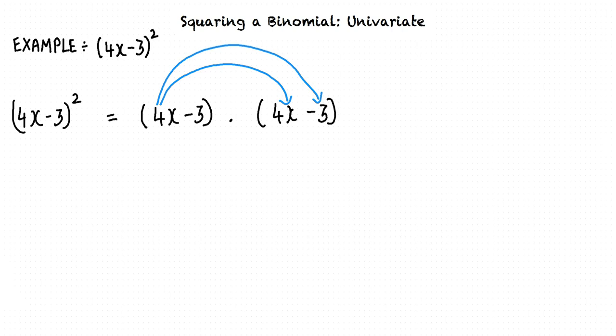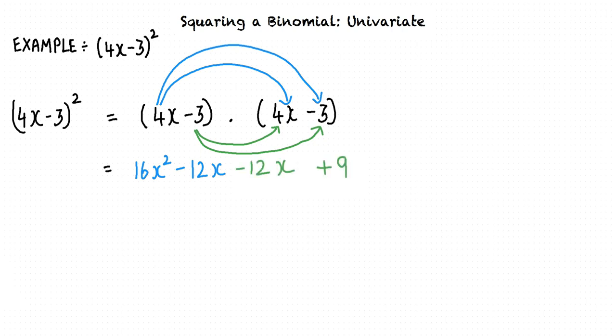We multiply the first term by the first term and then multiply the first term by the second term. 4x times 4x is 16x squared, and 4x times negative 3 is negative 12x. Next, we multiply the second term by the first term and then multiply the second term by the second term. Negative 3 times 4x is negative 12x, and negative 3 times negative 3 is positive 9.